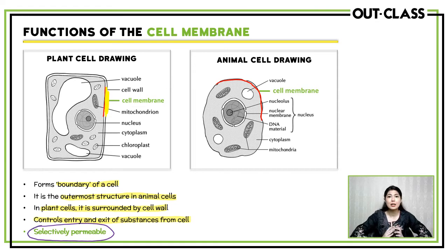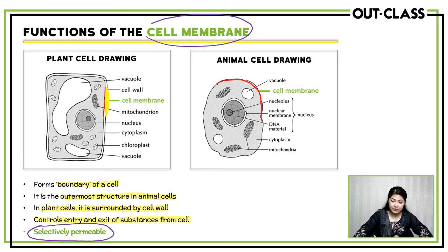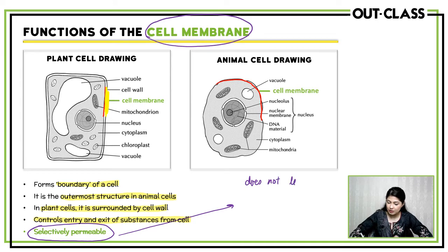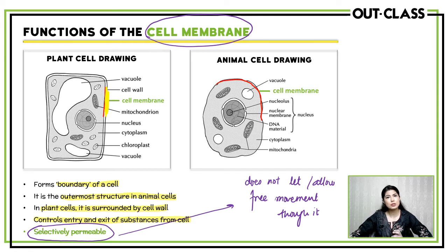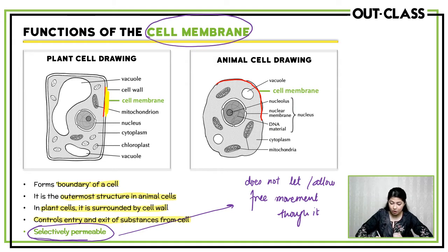The cell membrane has a very important quality: it is selectively permeable. That means, just like a checkpost that doesn't let everyone in if they don't have the correct documents — it won't let you in and it won't let you out — the same applies to the cell membrane. The cell membrane is selectively permeable, so it does not allow free movement through it. It's not the case that whoever wants to can exit or enter the cell; the cell membrane is the one that decides.